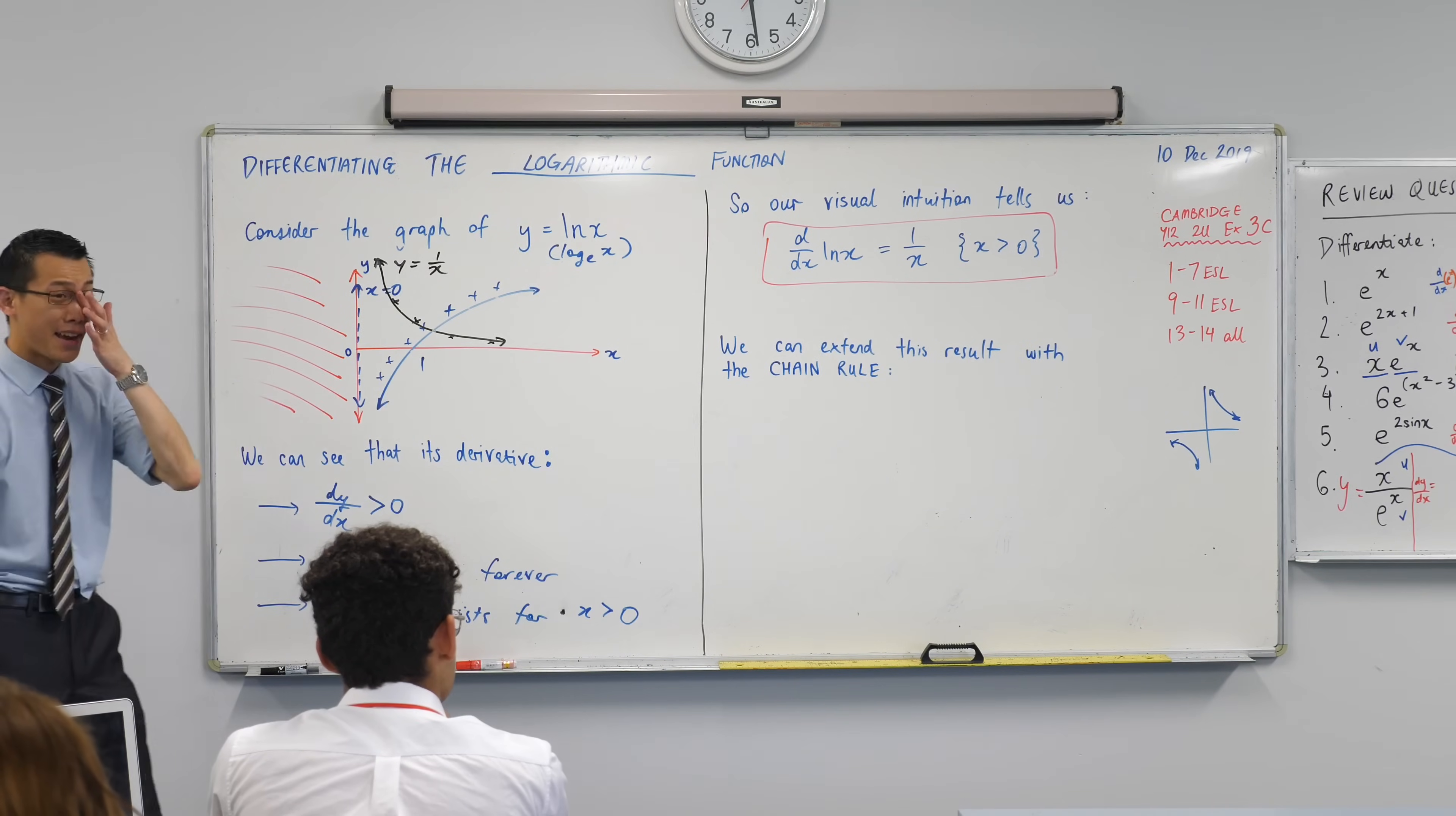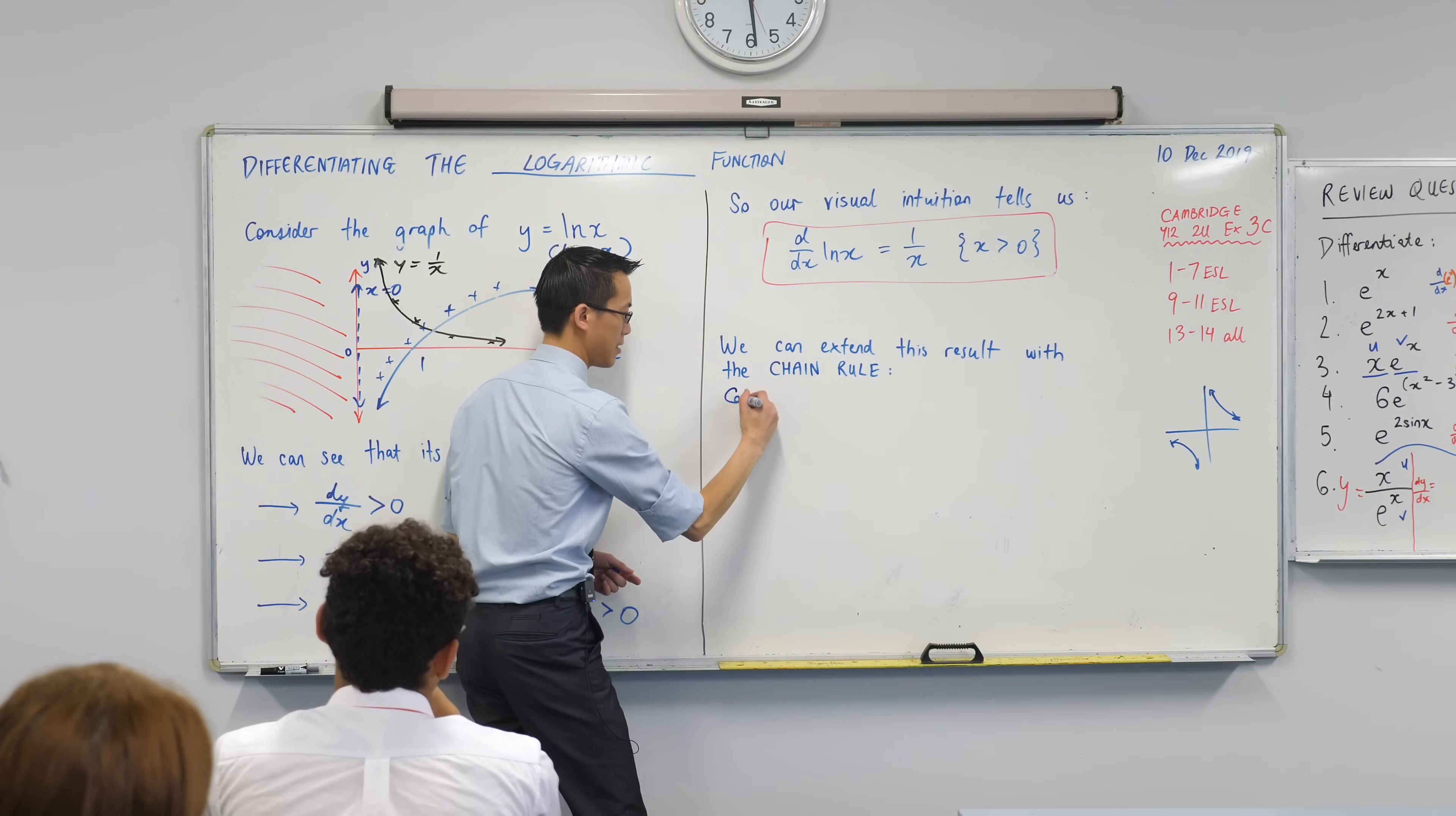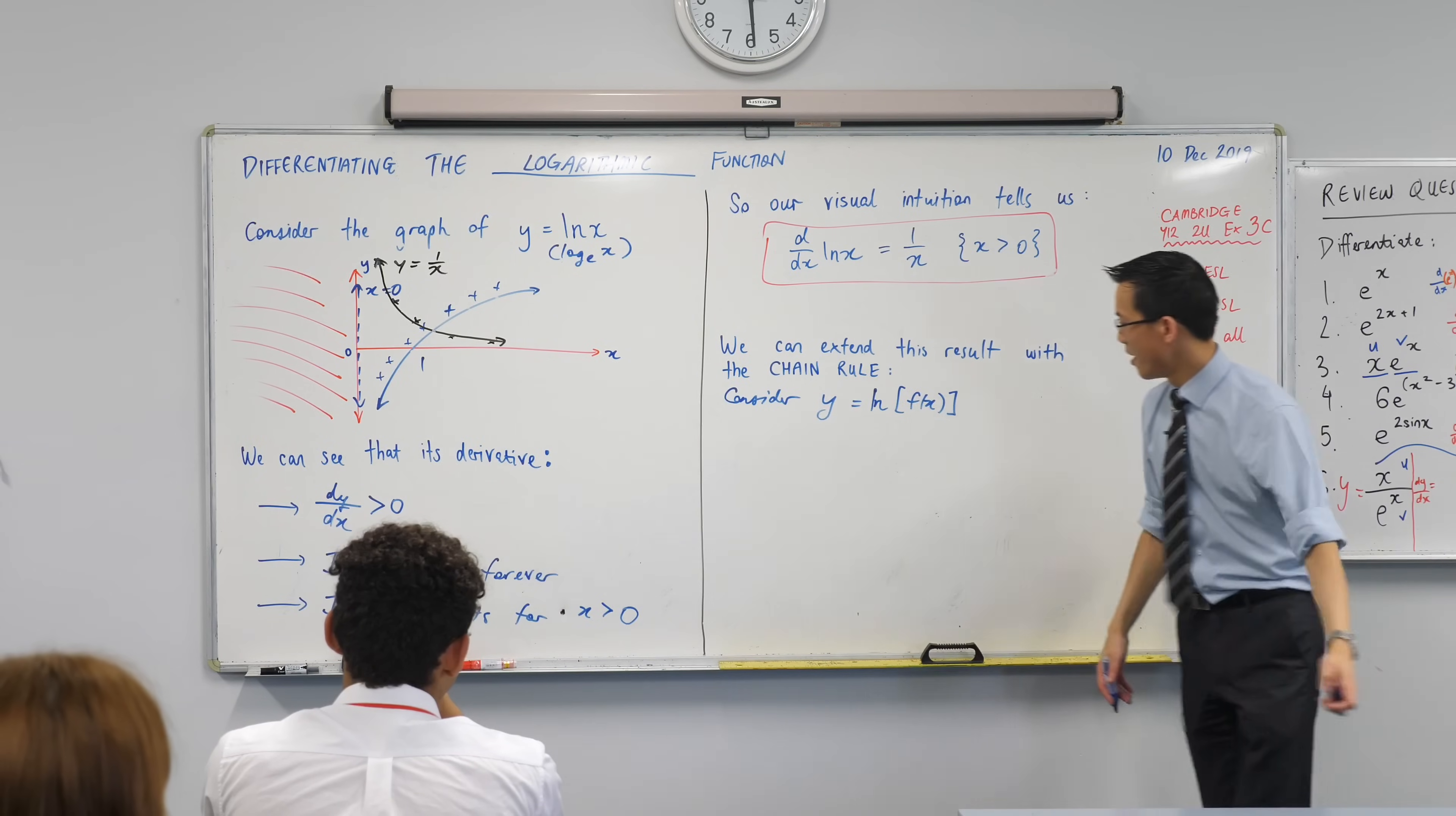Here's what we're gonna do: we're gonna take this log x and we're gonna look at, well, what if it's not log of just x? What if it's log of some other thing, right? Could be log of 2x plus 1, it could be log of 2 sine x, it could be log of anything. Can we still differentiate that? And the answer is yes we can, I'll show you how. If we have—let's consider some new function—y equals log of something else, I'm gonna call it log of f of x, some other function. And I really don't care what other function it is, I'm gonna do chain rule to this thing and I'll walk you through it step by step, and we can work out what the result is.